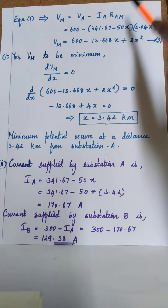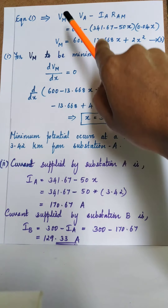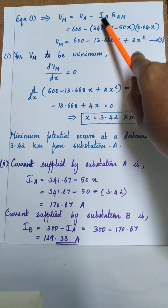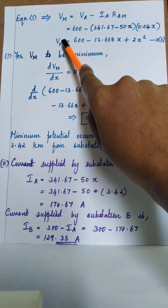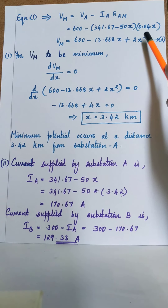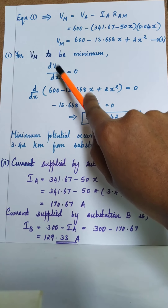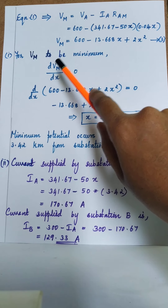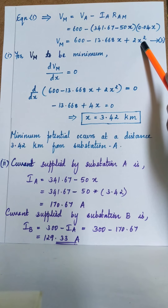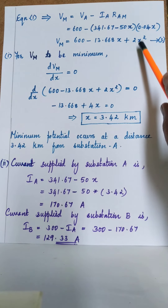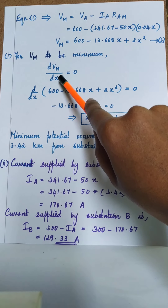From equation one, Vm = Va minus Ia times Ram. Our aim is to find the distance x for which Vm will be minimum. Substituting for Va, Ia, and Ram, we get Vm in terms of x: Vm = 2x² minus 13.68x plus 600. For Vm to be minimum, the differential of Vm with respect to x should be equated to zero.